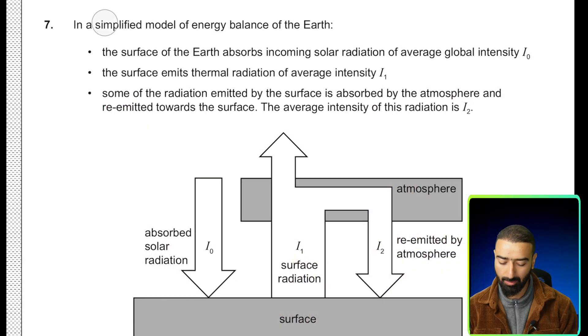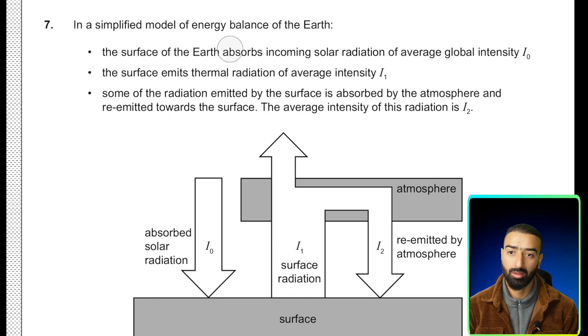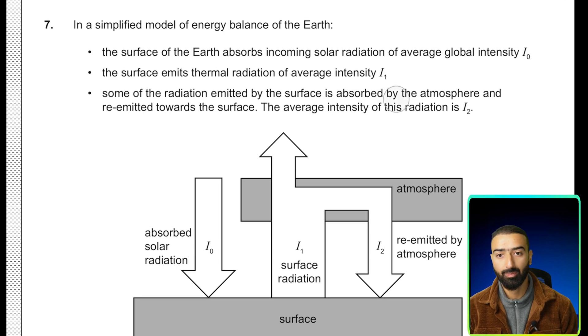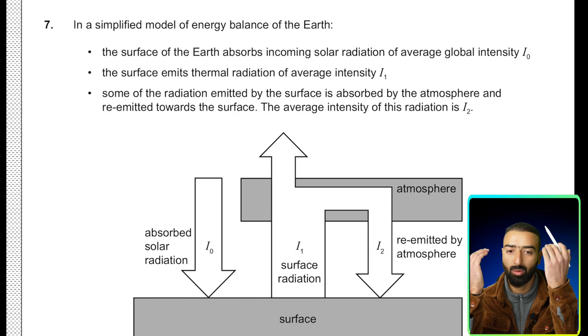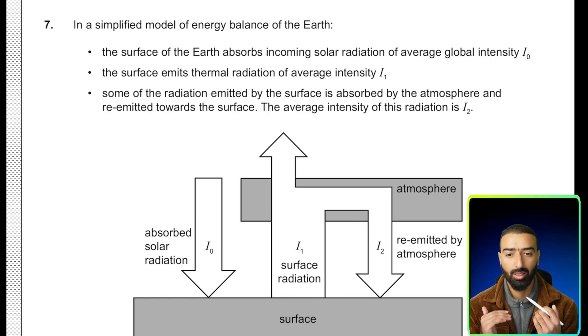Question 7. In a simplified model of energy balance of the Earth, the surface of Earth absorbs incoming solar radiation of average global intensity I0. The surface emits thermal radiation of average intensity I1. Some of the radiation emitted by the surface is absorbed by the atmosphere and re-emitted towards the surface. The average intensity of this radiation is I2, meaning I0 and I2 is the total intensity absorbed by the Earth, and then I1 is the intensity that's emitted.